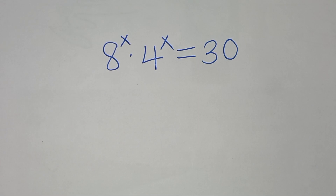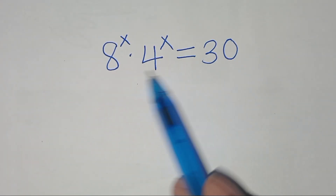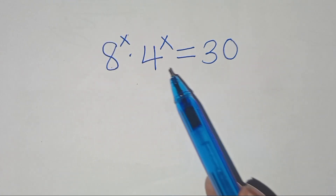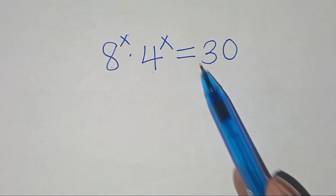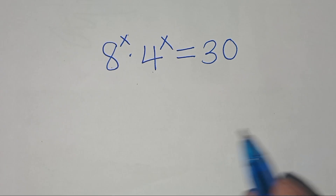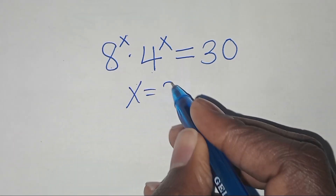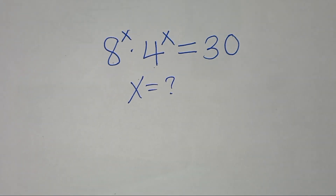Hello everyone. You are welcome to solve this nice exponential equation: 8 to the power x times 4 to the power x equals 30. What is the value of x?